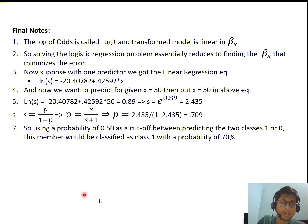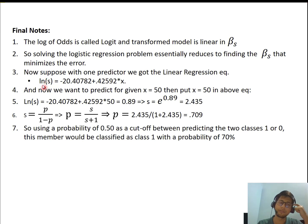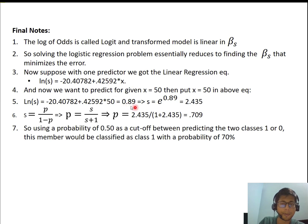Let's take an example with one predictor. Suppose we obtained the linear equation: ln(S) = −20.40782 + 0.42592x, where 0.42592 is the coefficient of x (β₁) and −20.40782 is the constant (β₀). To predict for x = 50, we substitute: ln(S) = −20.40782 + 0.42592 × 50 = 0.89. Solving further, S = e^0.89 = 2.435. This is the odds ratio.